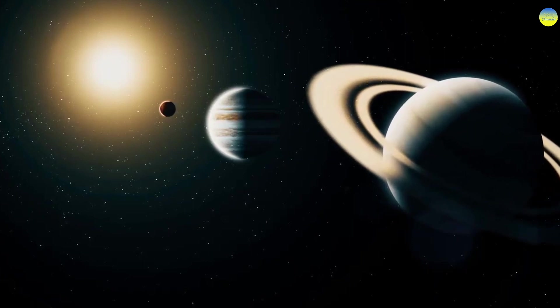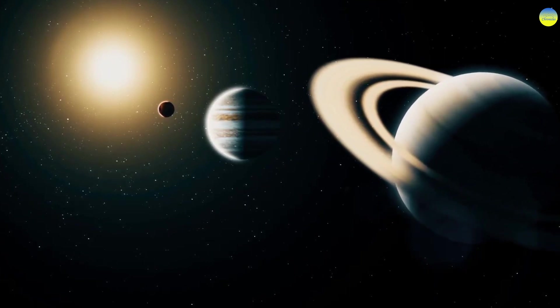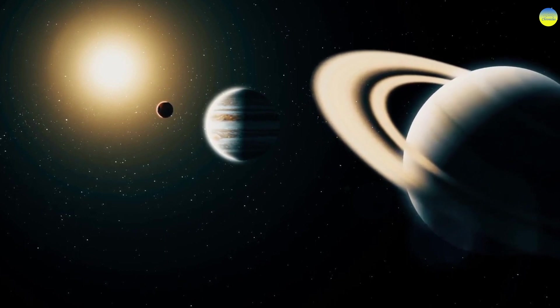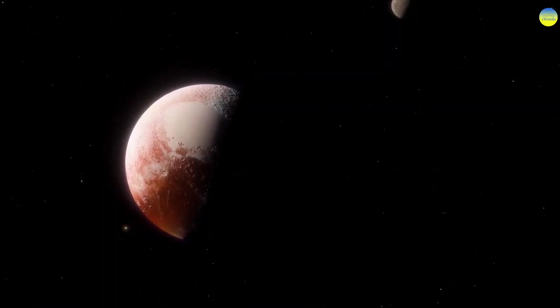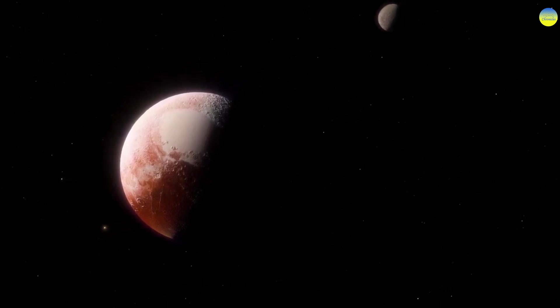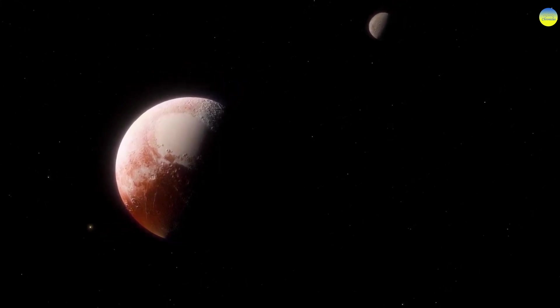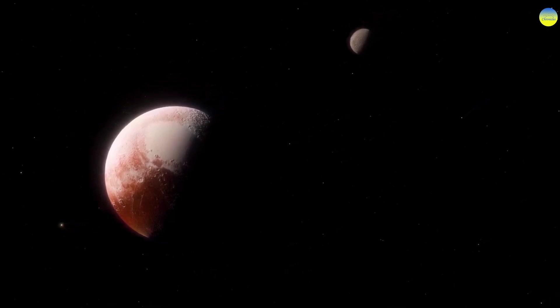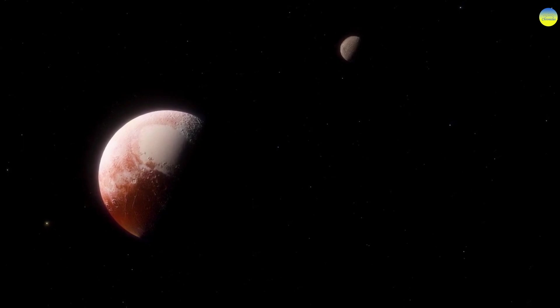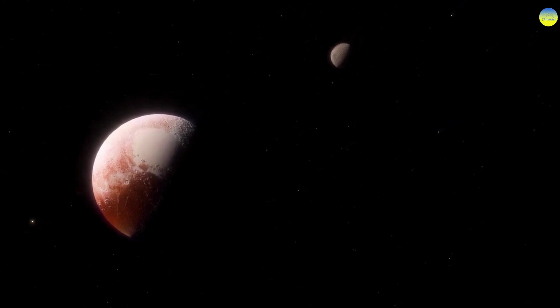Two planets can be in the same orbit around the sun only if they orbit around a common center of mass. An example of such a motion is the Pluto-Charon system. Charon is often called the satellite of Pluto, but it is not. The fact is that the center of mass of this system, around which Pluto and Charon revolve, is outside the surface of Pluto.